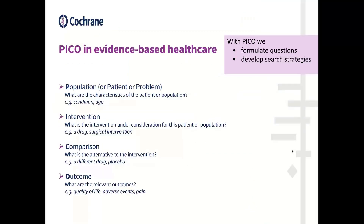A reminder of what PICO is. We use PICO to formulate our review questions and to develop our search strategies. P is for population or condition. I is for intervention — the drug or the surgical intervention. C is for comparison — placebo or a different drug to the interventional one. And finally, O is for outcome: death, pain, adverse events.